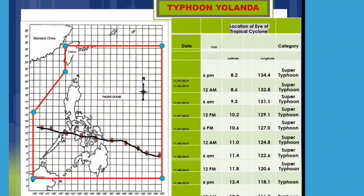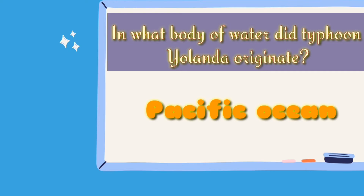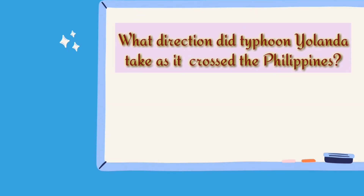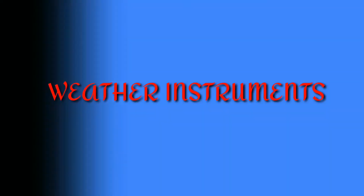This is the track of Typhoon Yolanda. Let us study it. In what body of water did Typhoon Yolanda originate? If your answer is the Pacific Ocean, you are correct. What direction did Typhoon Yolanda take as it crossed the Philippines? If your answer is northwest or west, you are correct.